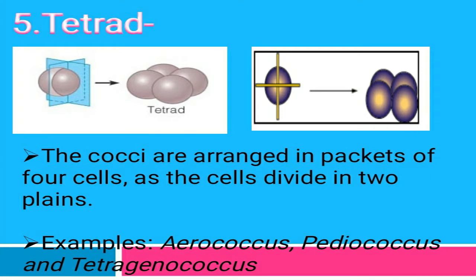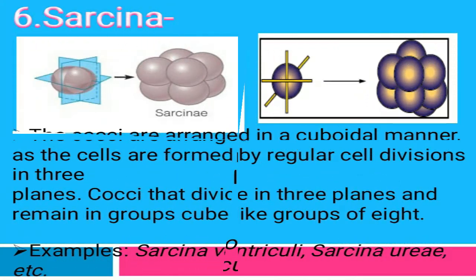The fifth arrangement is tetrad. In tetrad, the coccus cells divide in two planes — X and Y planes — and produce four cells. These four cells arrange themselves in a packet of four. This is called tetrad. Examples are Aerococcus, Pediococcus, and Tetragenoccoccus.